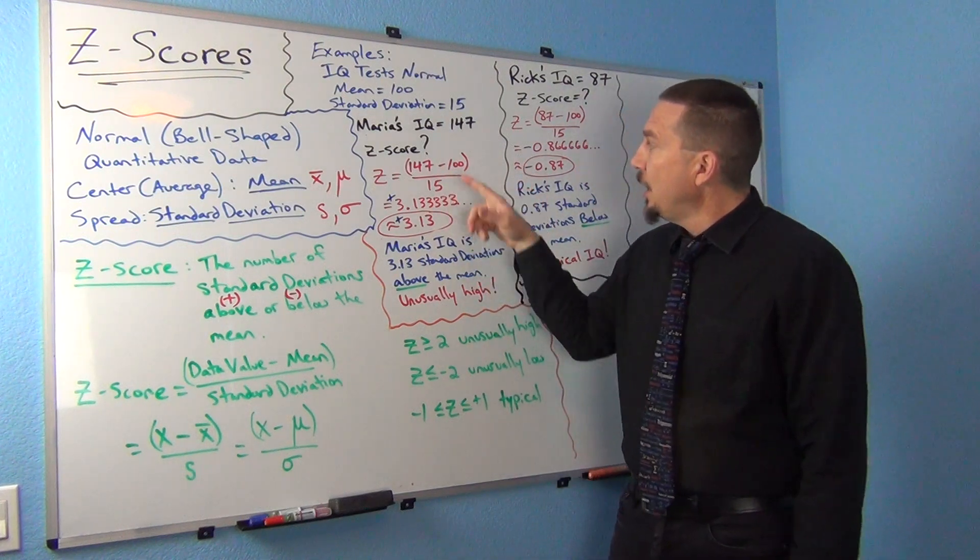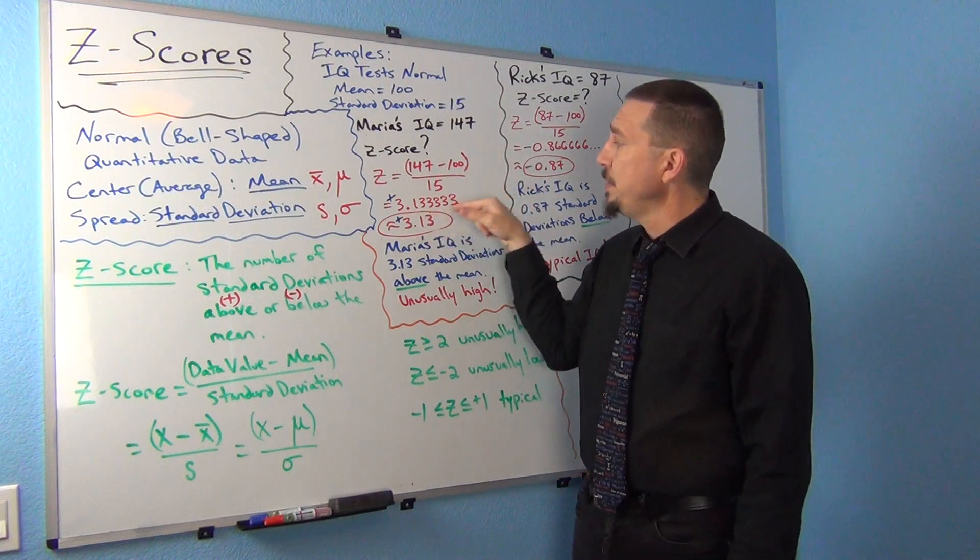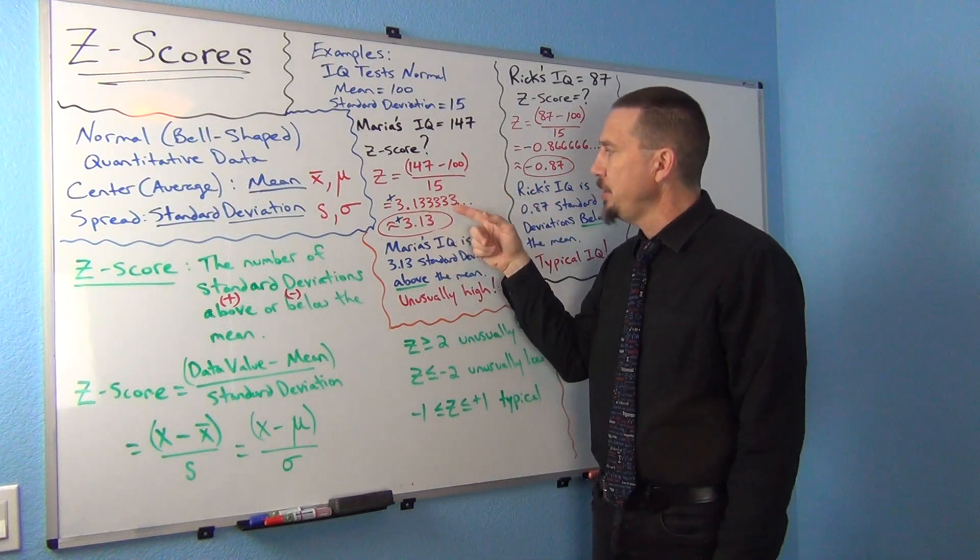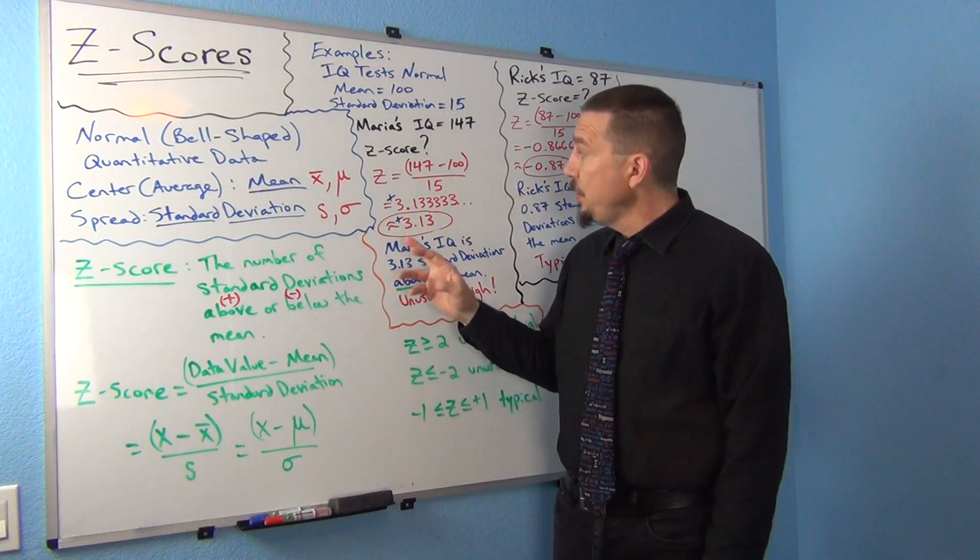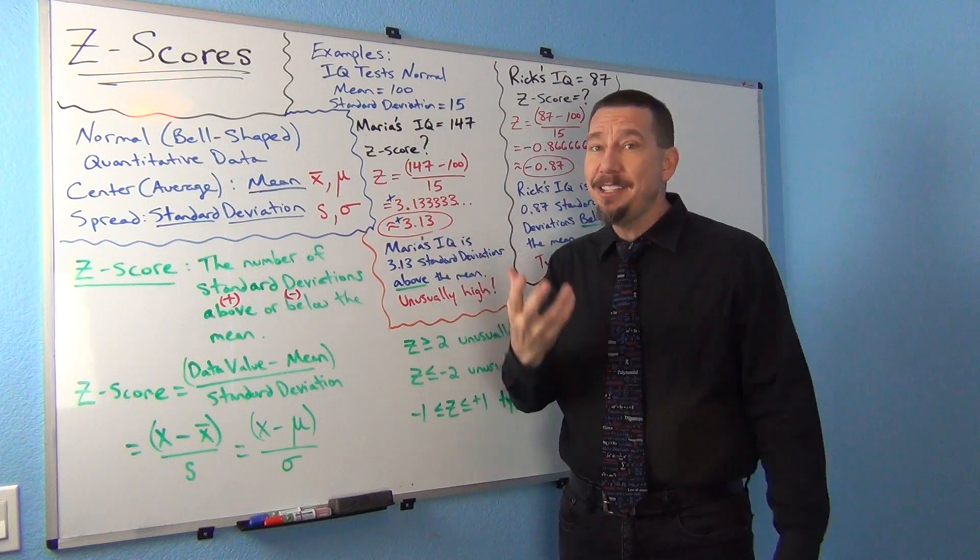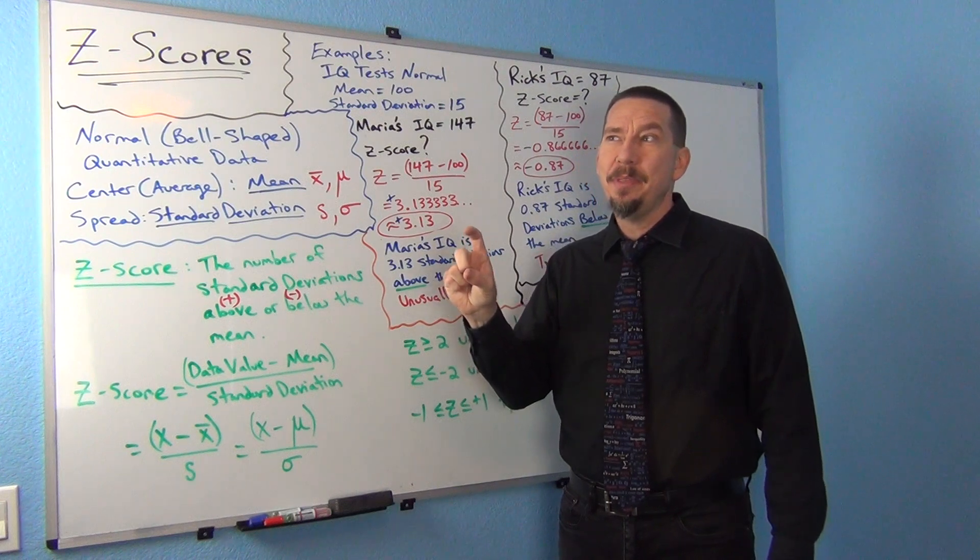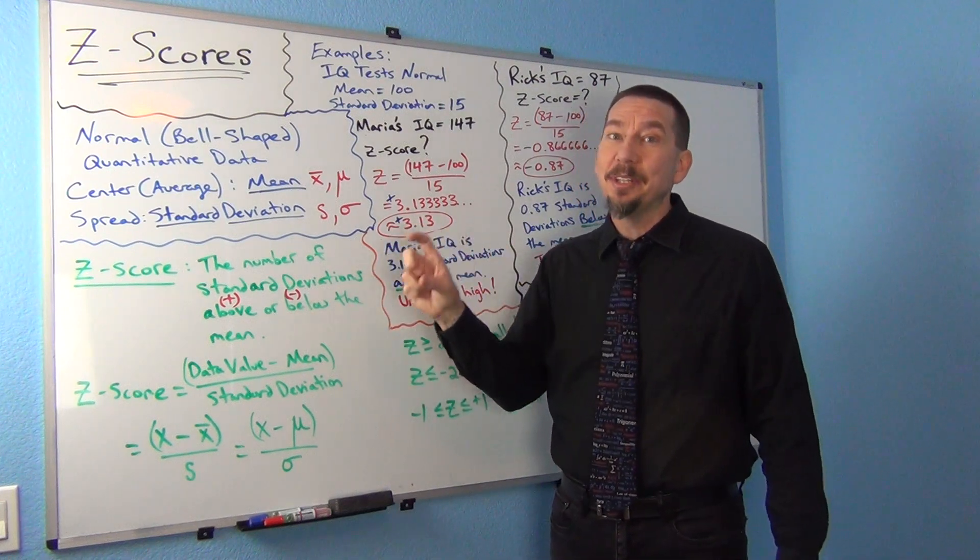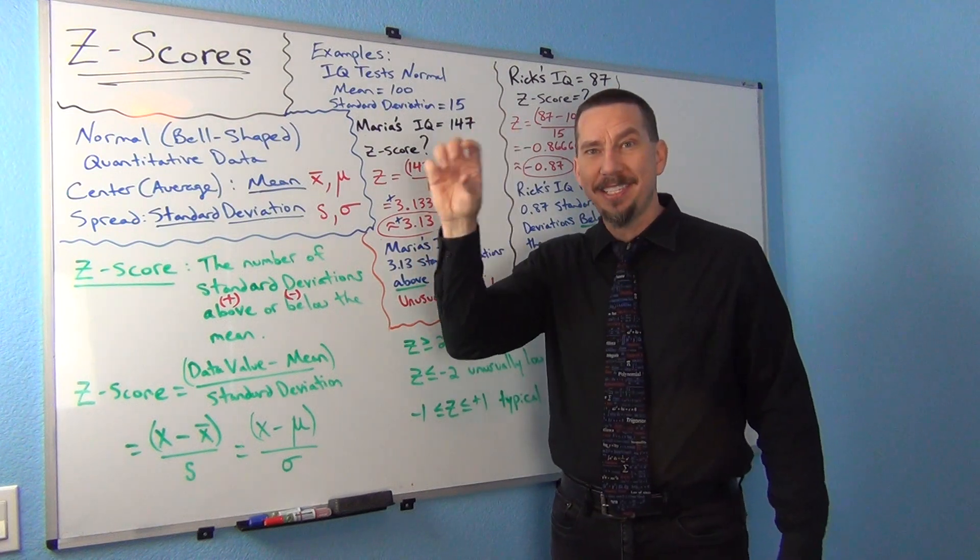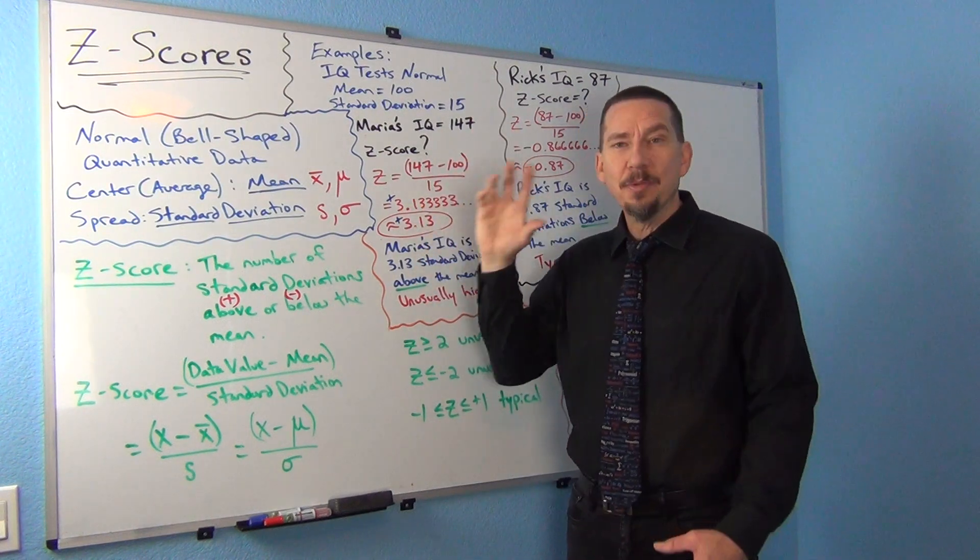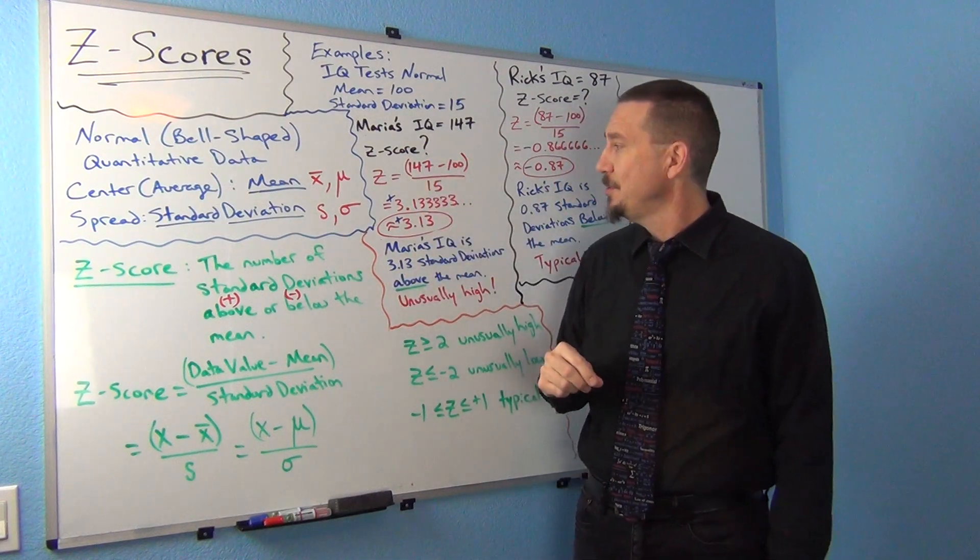So if we did that, 147 minus 100 is 47, and 47 divided by 15, you'd get positive 3.1333. That's the Z-score. If you notice, you didn't really have to put this little positive sign. I do that anytime. A lot of times in certain statistics, the positive and negative is really important in terms of interpretation. So a lot of times I will make sure to put a little symbol next to it, just reminding myself that it's a positive value or a negative value. That's really important with Z-scores.